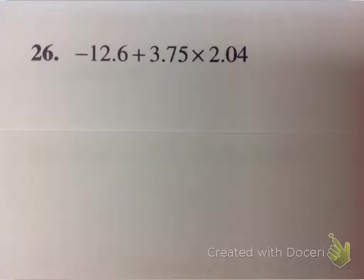Okay one more, now this is actually an order of operations problem combining, looks like we have an addition and a multiplication. So remember when you're working with order of operations, you have to do the multiplication first. So I need to do 3.75 times 2.04, I got to do that first.